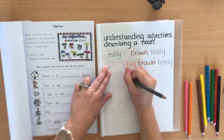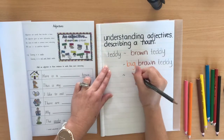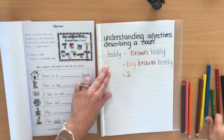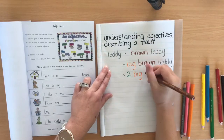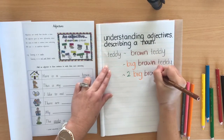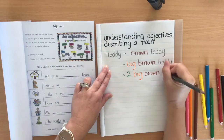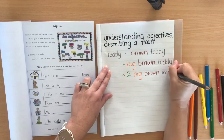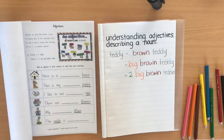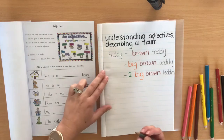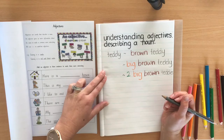You might say, 'I have two big brown teddies.' The more information that you give me is going to help me understand what you're trying to describe. So what I'd like you to do is look around the room, find ten nouns, and choose an adjective to describe each noun.